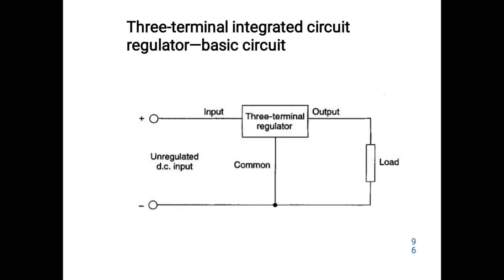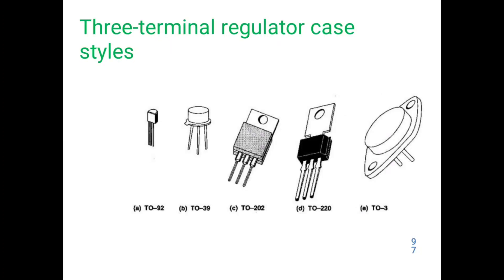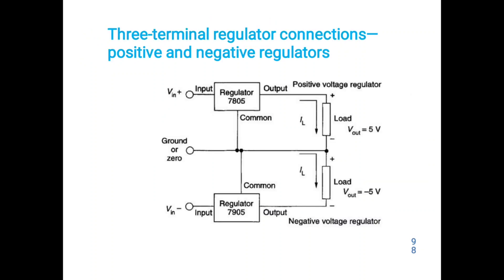The three-terminal regulator has a basic circuit with DC input through three terminals. The first is the input terminal, the second is the output terminal, and the third is the common terminal. The common output terminal connects to the load connections at the negative. The terminals have regulated case styles with five methods or models of case styles. The terminals accommodate positive and negative regulators.